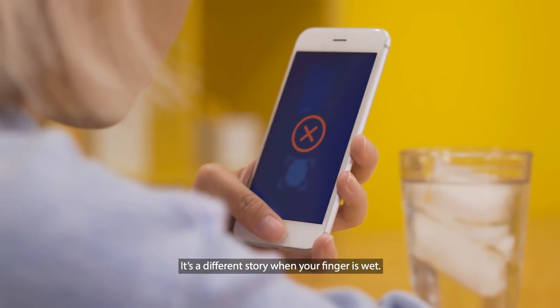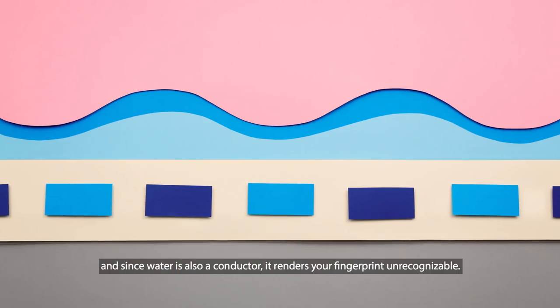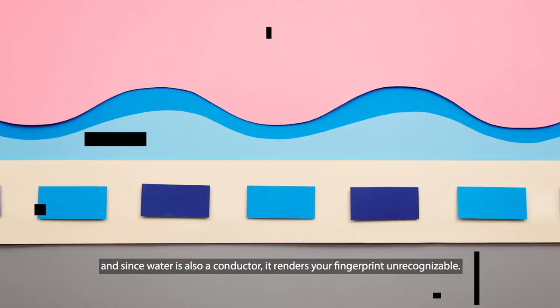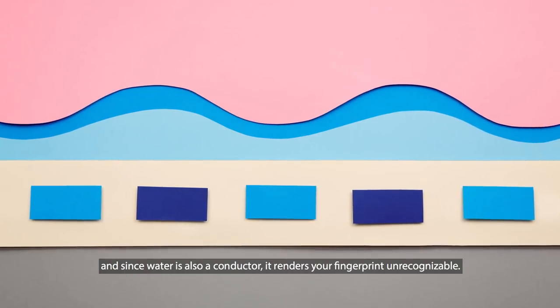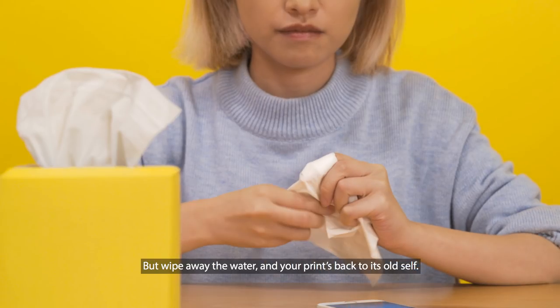It's a different story when your finger is wet. Those air-filled valleys are now full of water, and since water is also a conductor, it renders your fingerprint unrecognizable. But wipe away the water, and your print's back to its old self.